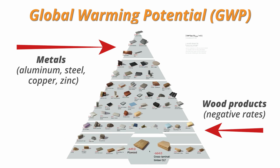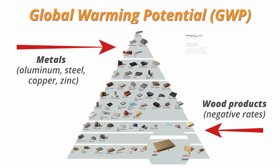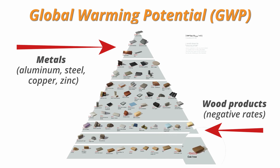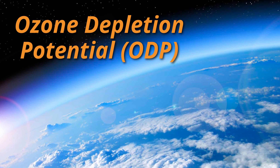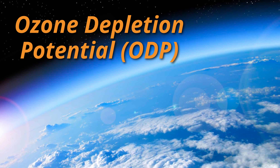Wood products have negative rates — they absorb more greenhouse gases than they produce during their manufacturing.